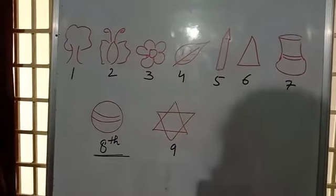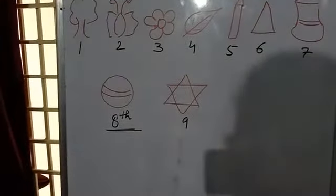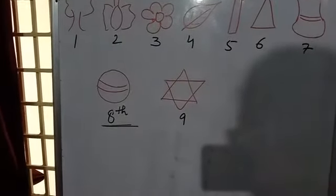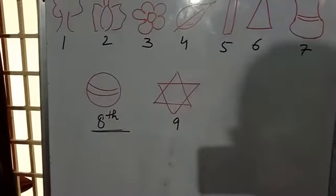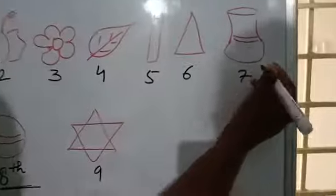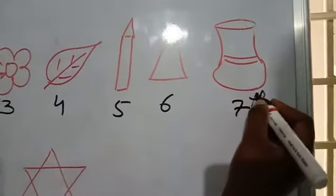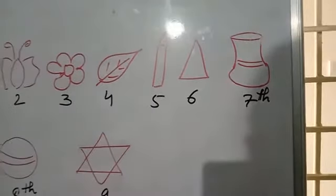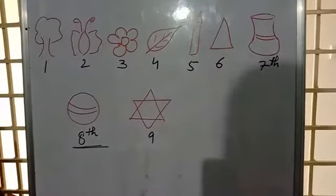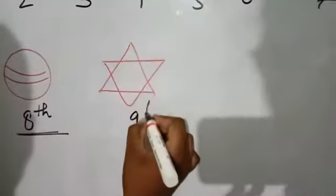Now what is the position of a pot? Position of a pot which is placed on the board? Yes, it is on 7th position. So here we will be adding TH. 7th position. And what is the position of a star? Yes, it is on 9th position.